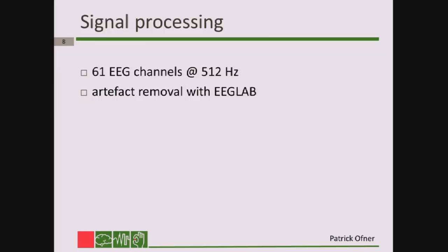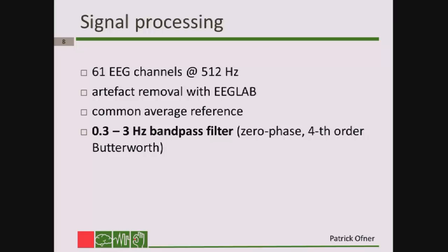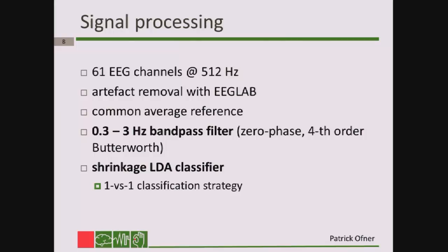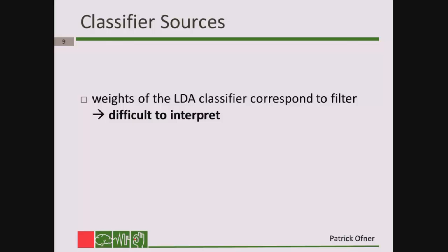Now let's switch to the signal processing. We recorded 61 EEG channels. To obtain the low-frequency time domain signals, we applied a bandpass filter from 0.3 to 3 Hz. We classified the signal with a shrinkage LDA classifier. Because it was a multi-class problem — remember six movement classes — we used a one-versus-one classification strategy. Finally, we validated our results with a 10x10 cross-fold validation.